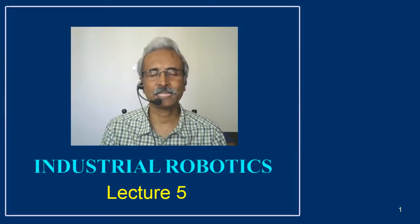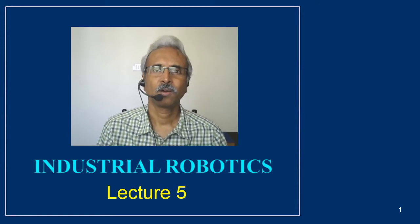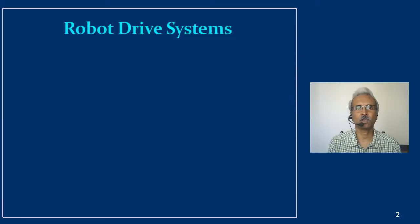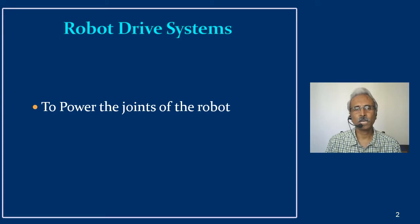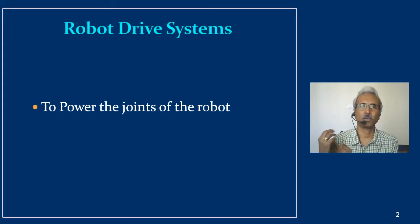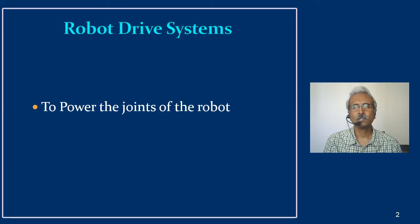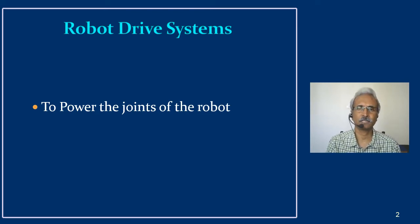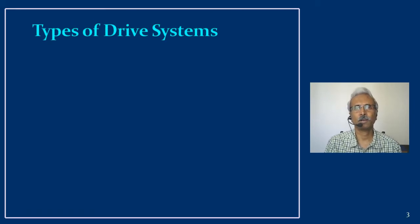Hello viewers, welcome to Lecture 5 for the subject Industrial Robotics. Hope the previous lectures were useful. In this lecture we discuss the robot drive system. The drive system is what powers the joints of the robot. Earlier we discussed how in humans, the brain gives commands and muscles move the joints. In robots, how do we power the joints — is there only one way, or are there multiple ways, and how do we choose?